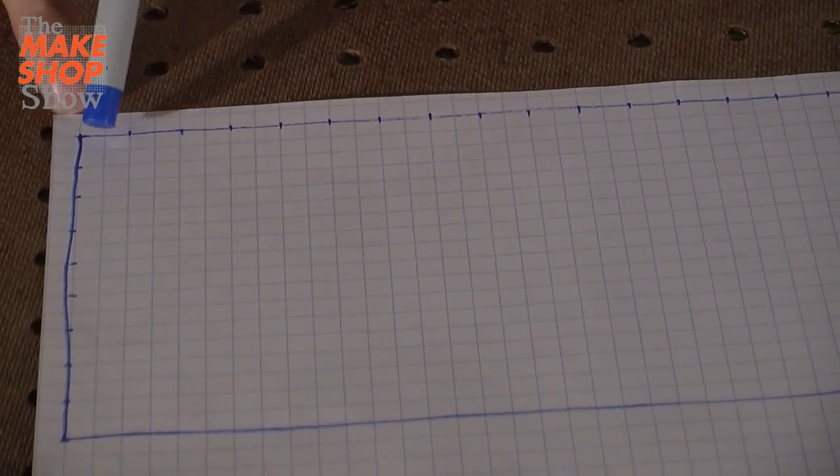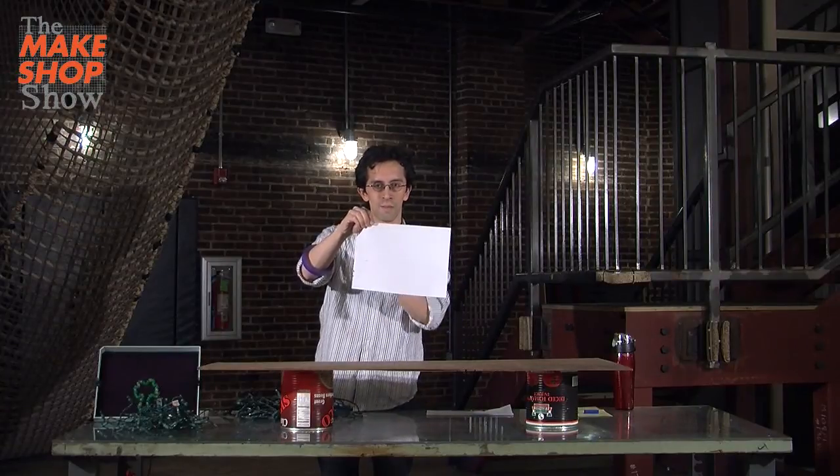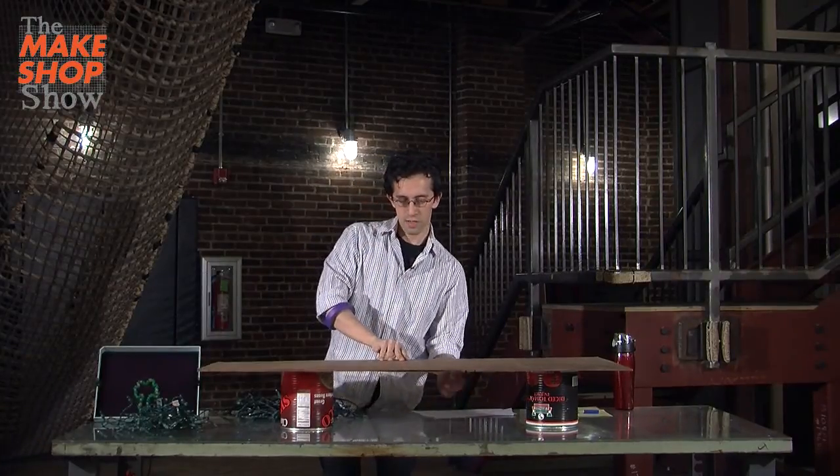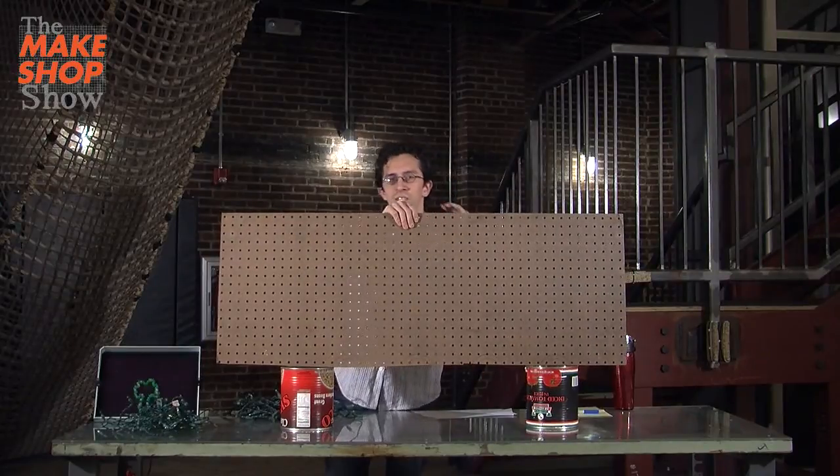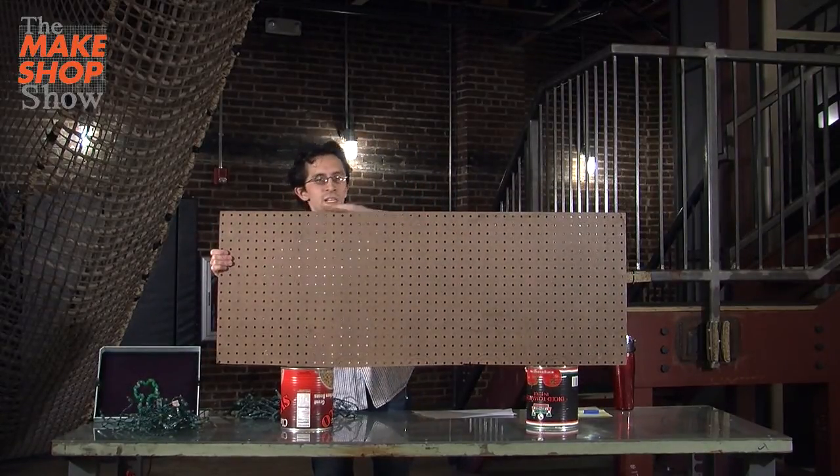I'm gonna use some graph paper, which is a special kind of paper with grids on it. I'm going to mark out the size of our board, which I've measured is about 18 holes by 48 holes.